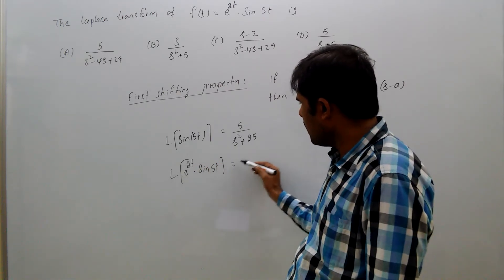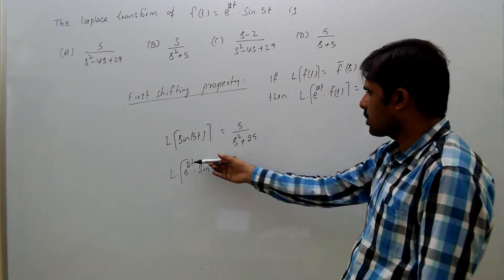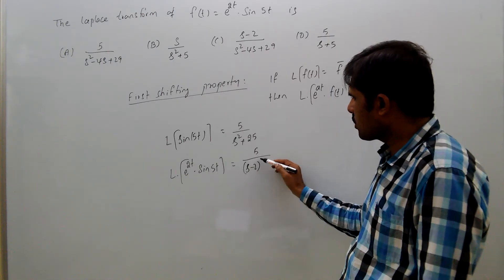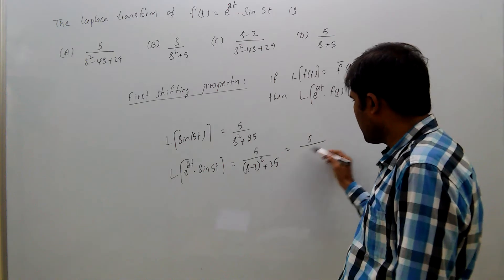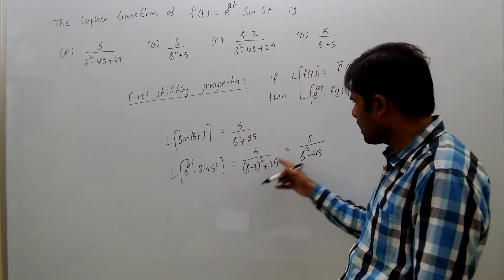giving us 5/((s-2)^2 + 25) = 5/(s^2 - 4s + 4 + 25) = 5/(s^2 - 4s + 29).